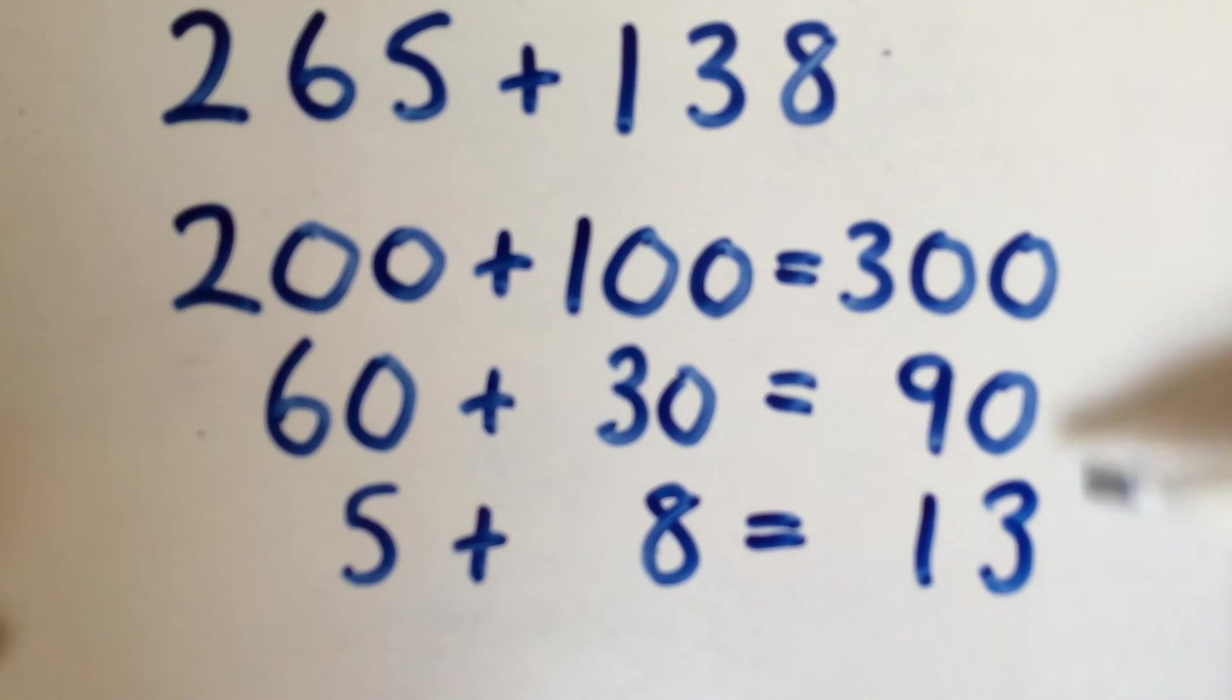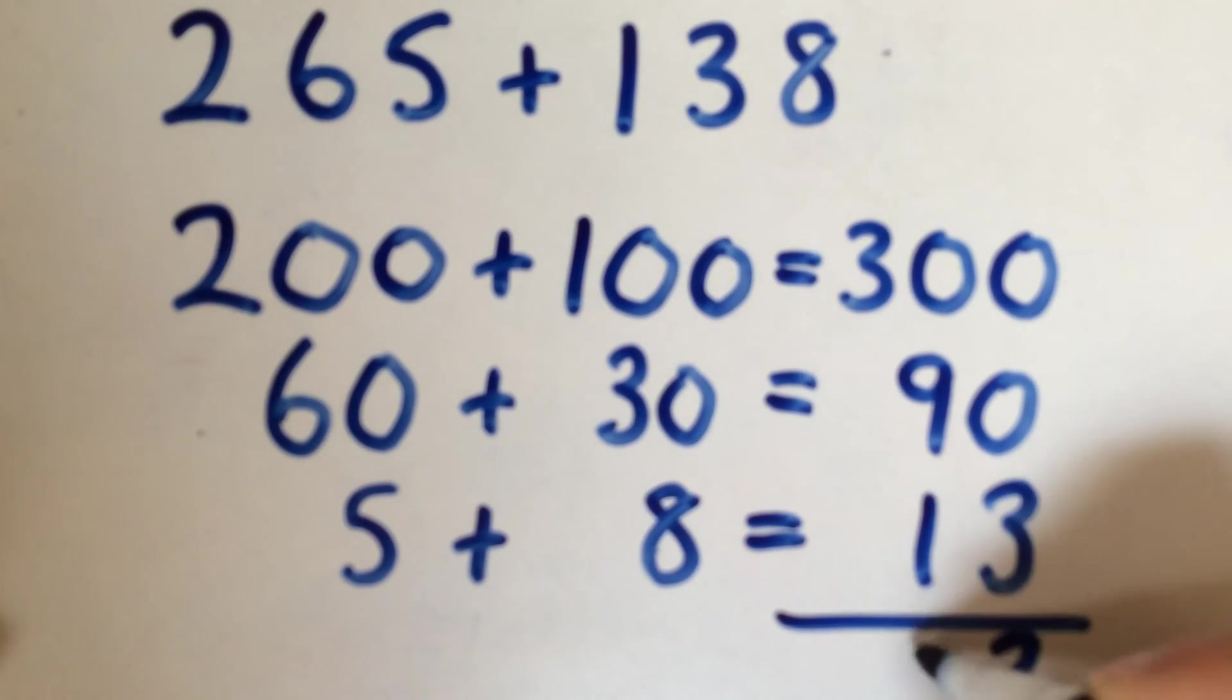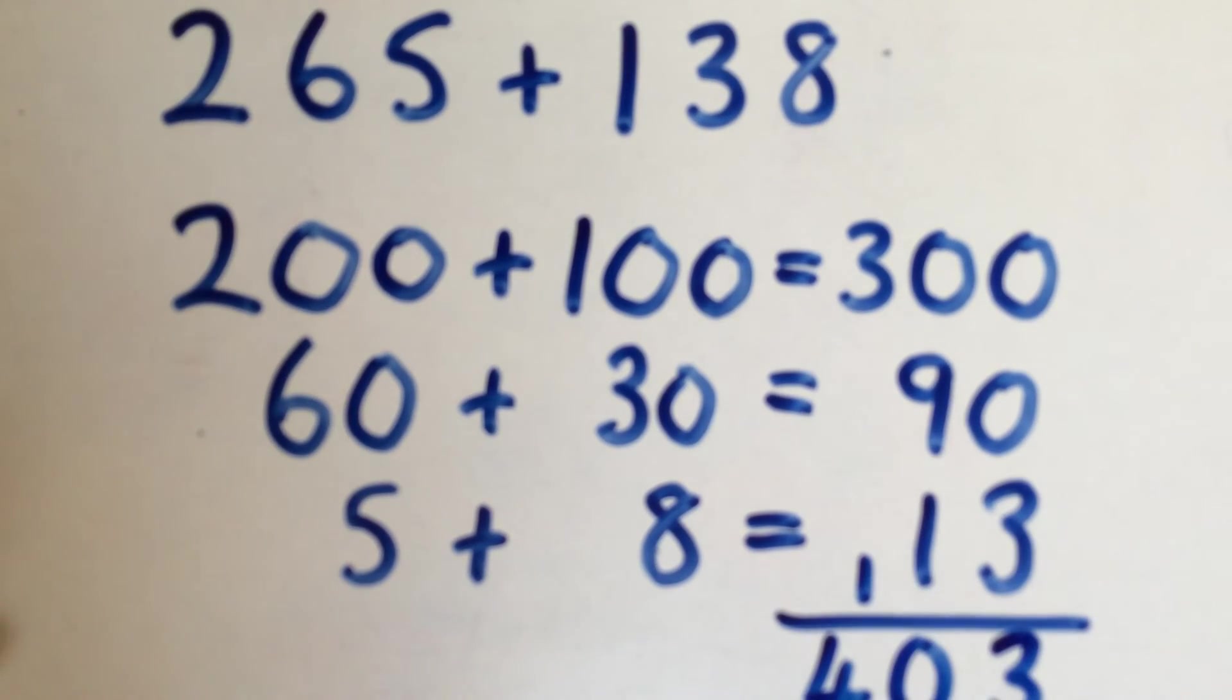So at this point, if a child is confident with doing addition chimney sums, you can then leave this as a chimney sum and add up the totals, which should give you 403 as your answer.